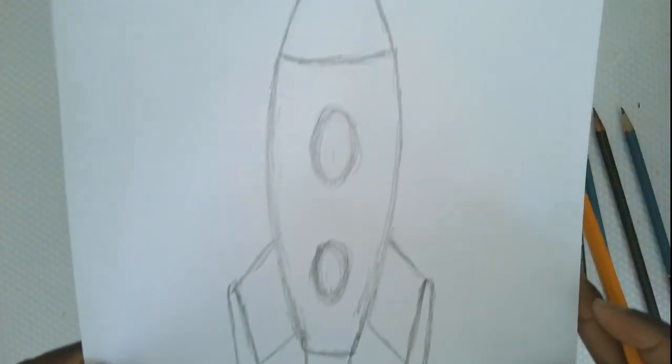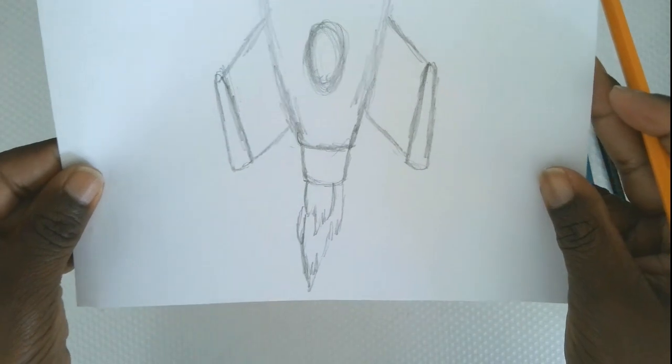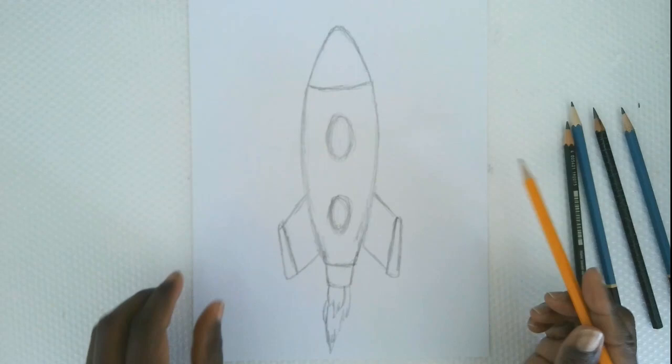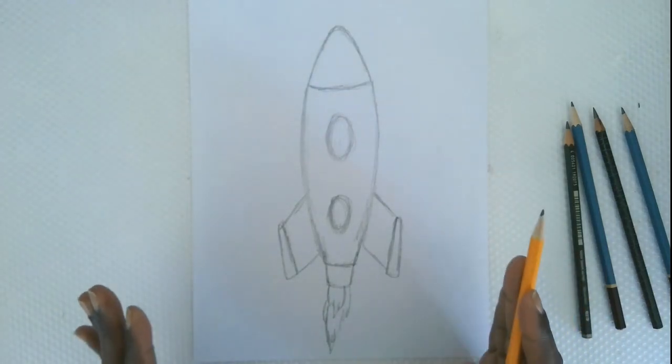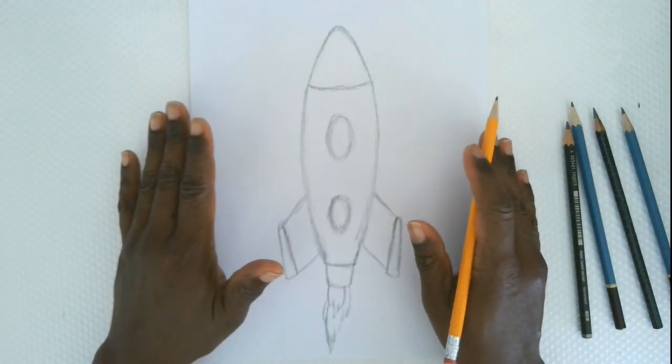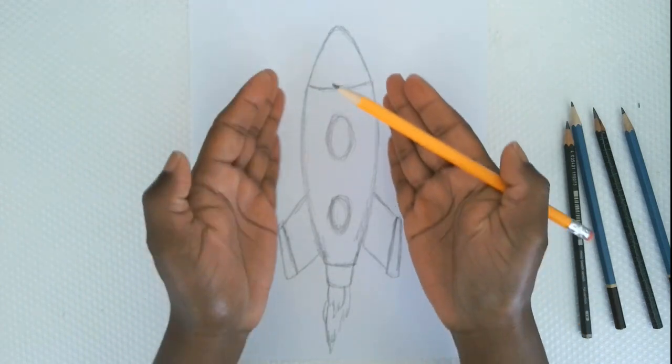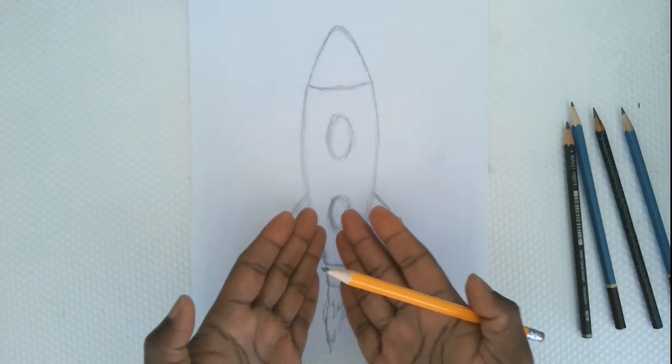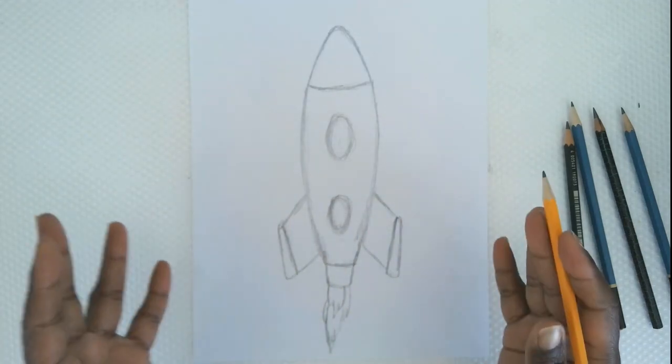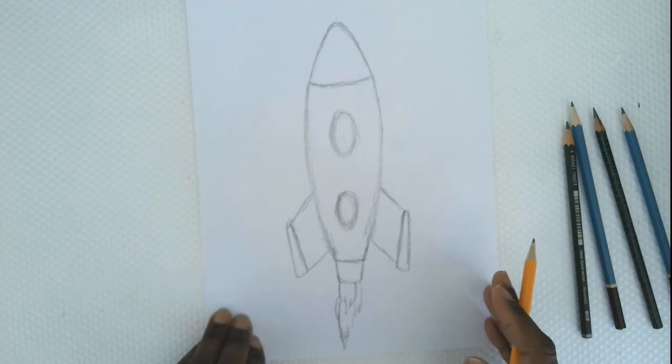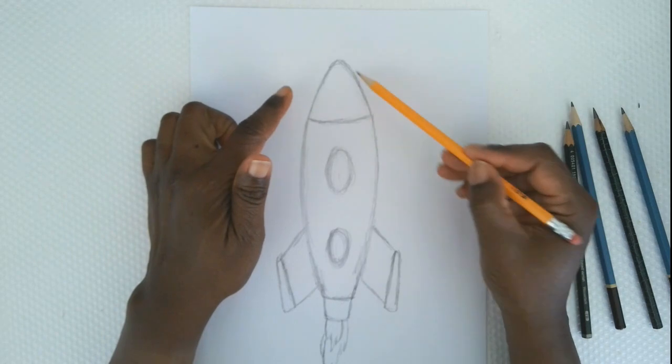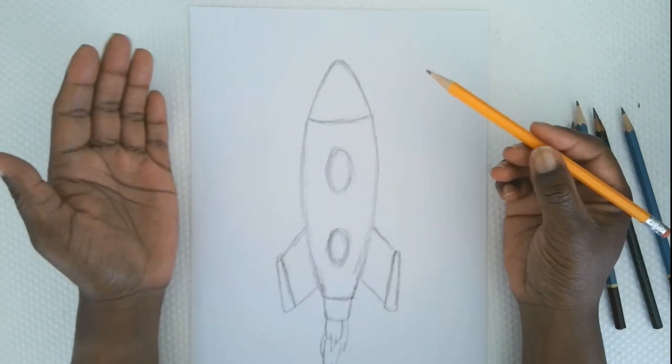All right, so that's my basic outline. I've got the nose of the spaceship, the body, the fins, and the fire. Okay, so now we're ready to start shading. The most important thing to know about trying to make something look round on a flat piece of paper - this is kind of like magic - is that you want the edges of whatever you're drawing to be darker than the center, and that will give the illusion that it's curved. It's just a trick of the eye.